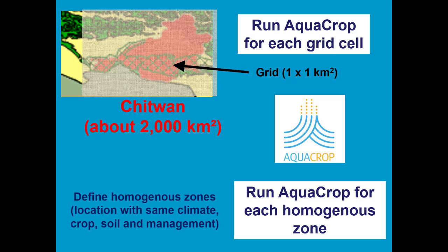To simplify things, we can also try to define homogeneous zones and run AquaCrop for each of those zones. In a homogeneous zone, we have the same climate, the same crop, the same soil, and the same management.